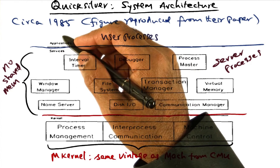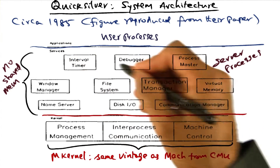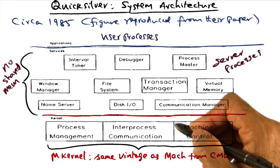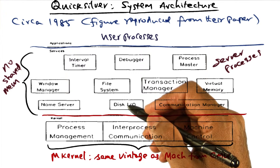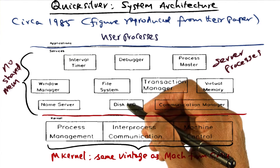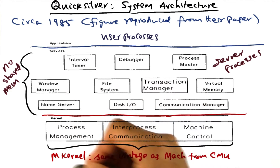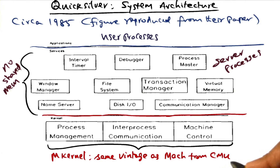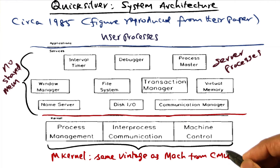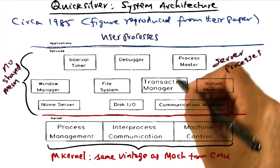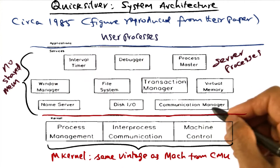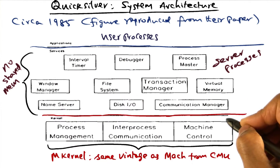As I mentioned earlier, Quicksilver was done in the early 80s. Here is a sketch reproduced from their paper. An interesting thing you notice is that this sketch is very similar to what I showed you as a current structure of networked operating systems in the earlier panel. It's a microkernel-based design, and Quicksilver was the same vintage as Mach from CMU. Having seen the structure of operating systems in earlier lessons, this picture should be very familiar to you.